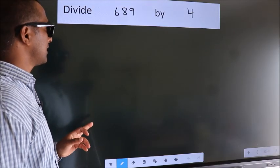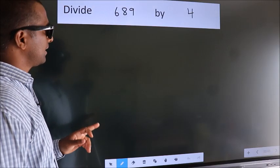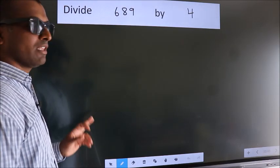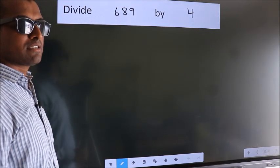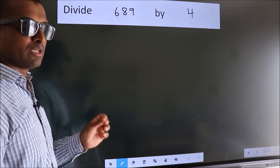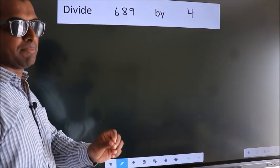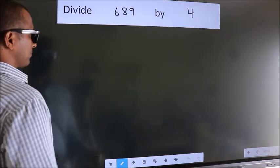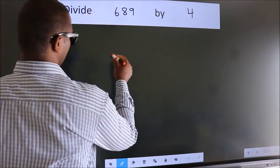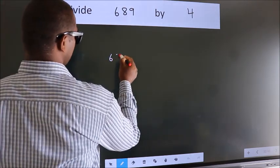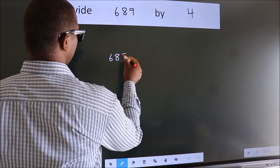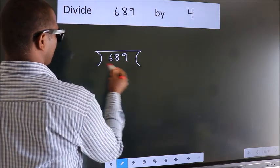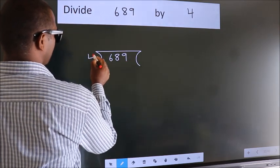Divide 689 by 4. To do this division, we should frame it in this way: 689 here, 4 here.